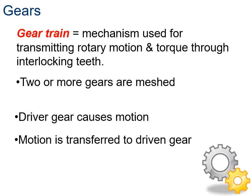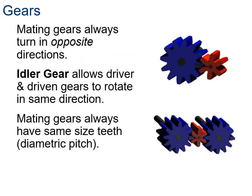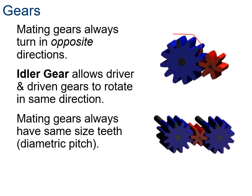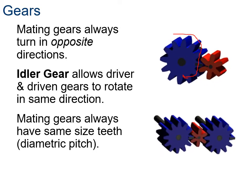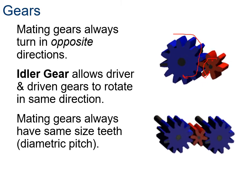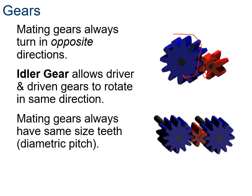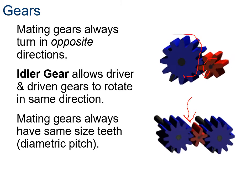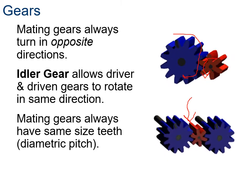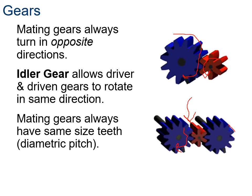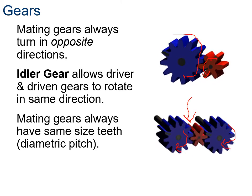A driver gear is the one causing motion; motion gets transferred from the driver gear to the driven one. Mating gears always turn in opposite directions - the blue one is moving clockwise and the red one is moving counterclockwise. Below, the red one in the middle is an idler gear, which allows the driver and driven gears to go in the same direction - both the left and right gears go clockwise.